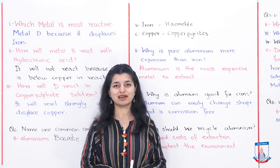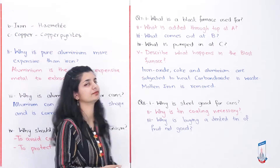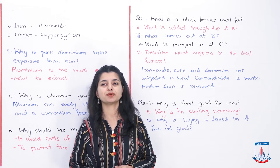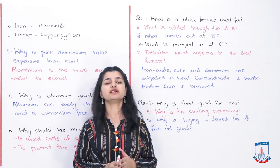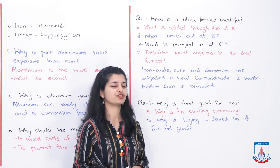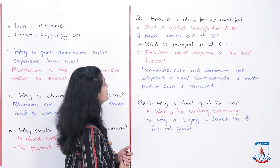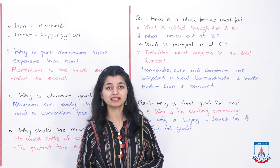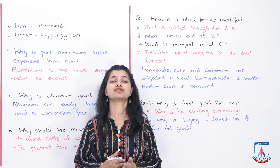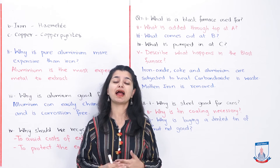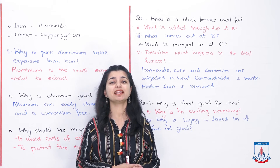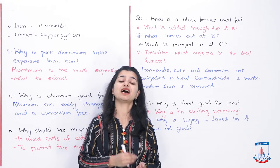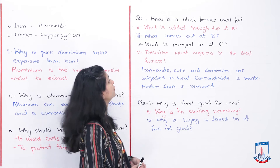Now let's look at question number 7, which is about the smelting of iron process. They have given you an image of the blast furnace and asked questions about it. The first question is: what is a blast furnace used for? A blast furnace is used for iron extraction — to extract and remove iron from its ore and remove impurities.